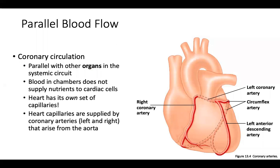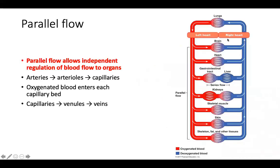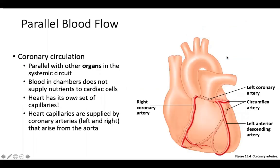We also want to think about the coronary circulation, which is a part of the parallel flow. The coronary circulation is on the outside of the heart — it would be tempting to think the heart takes oxygen from blood circulating within the chambers, but that is not true. The heart gets its oxygen and eliminates waste through the coronary circulation. There are vessels running on the outside of the heart: the left coronary artery supplies the left part of the heart, the right coronary artery supplies the right side, and there are coronary veins as well.